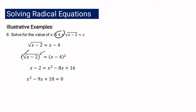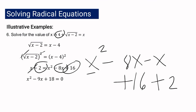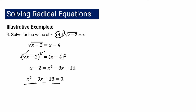Simplifying the resulting equation: bring x to the right and negative 2 to the right using the addition property of equality. We get x squared minus 8x minus x plus 16 plus 2 equals 0, which simplifies to x squared minus 9x plus 18 equals 0.